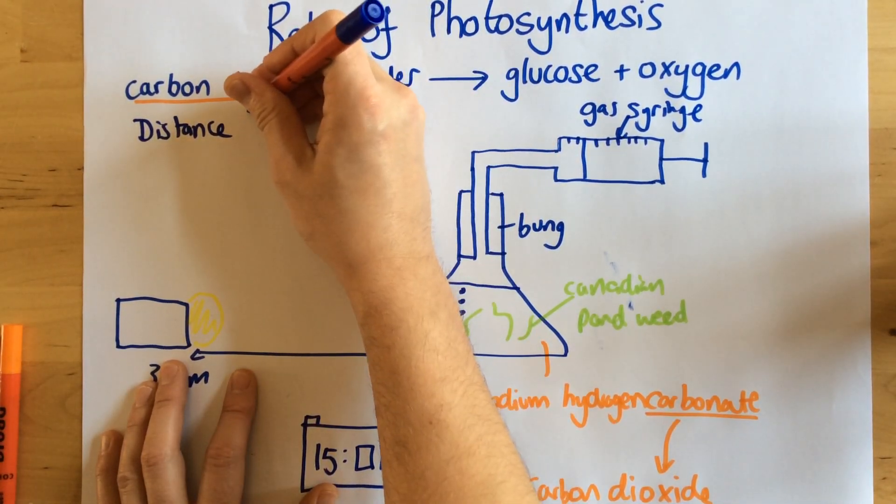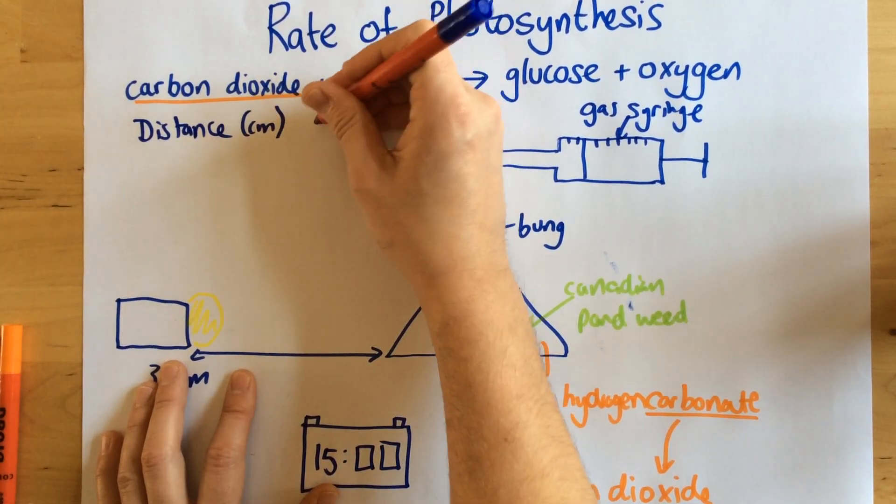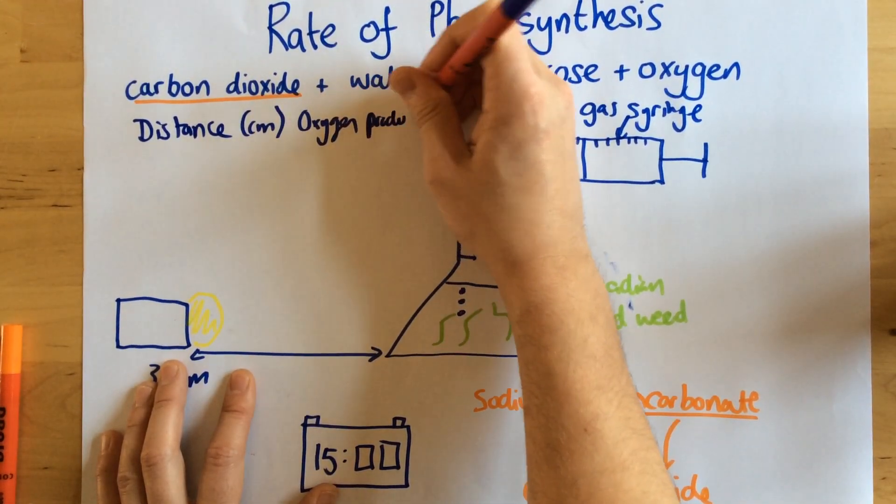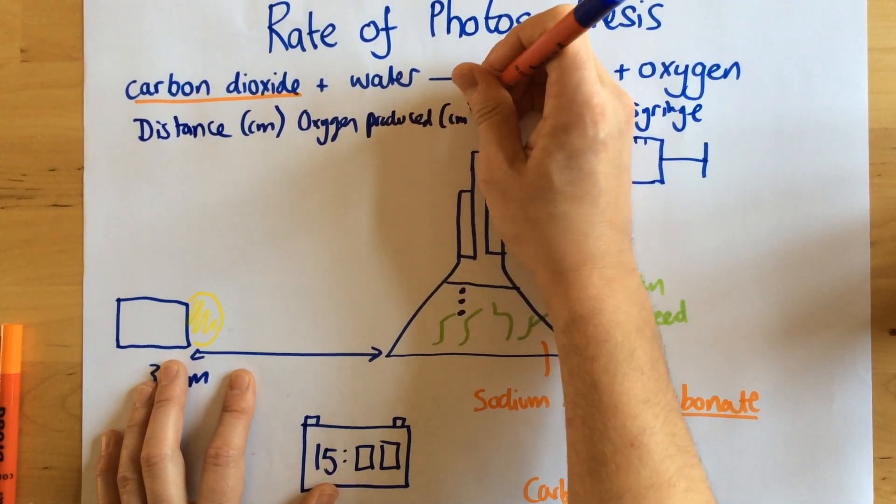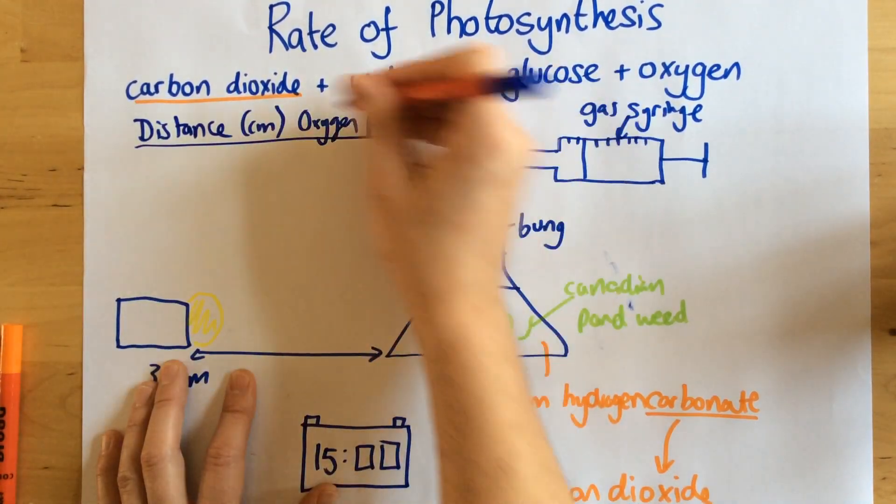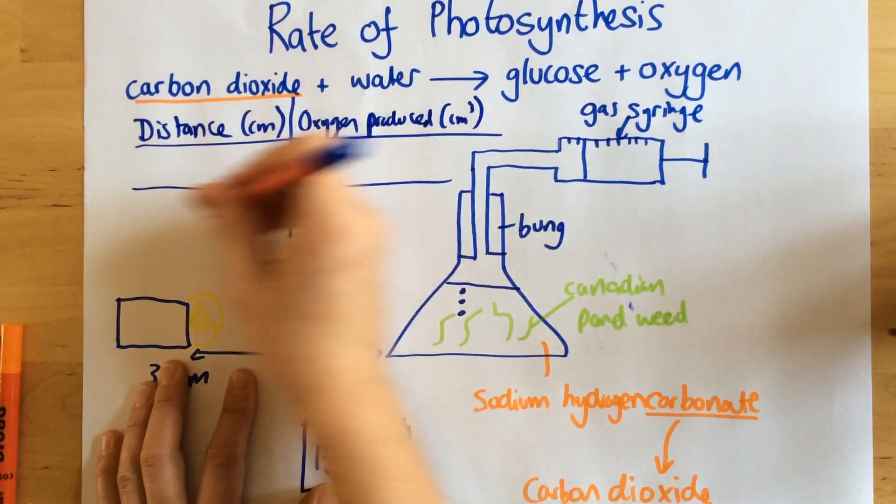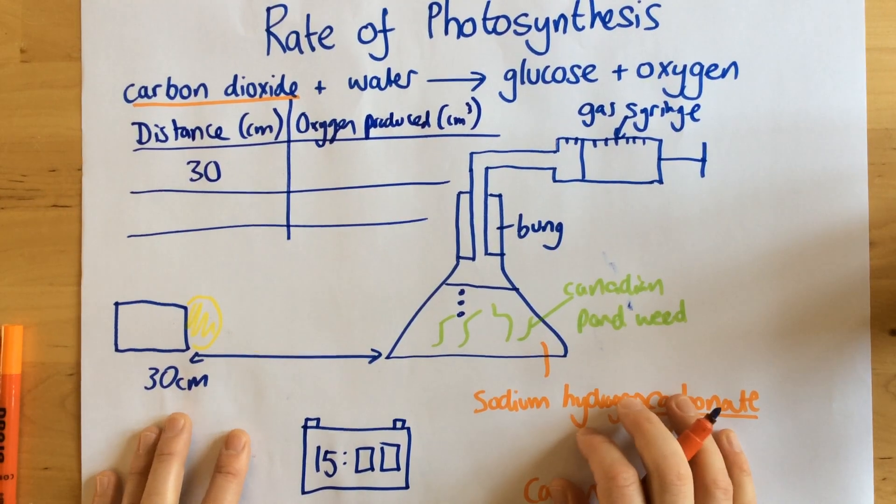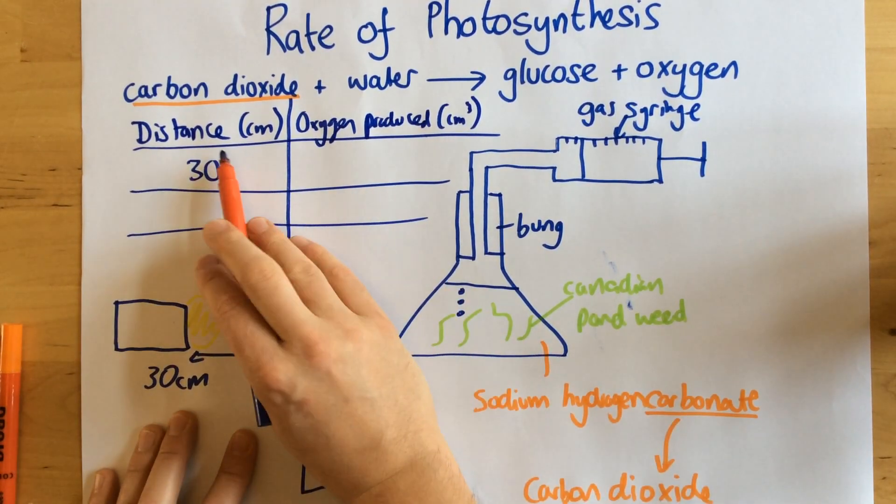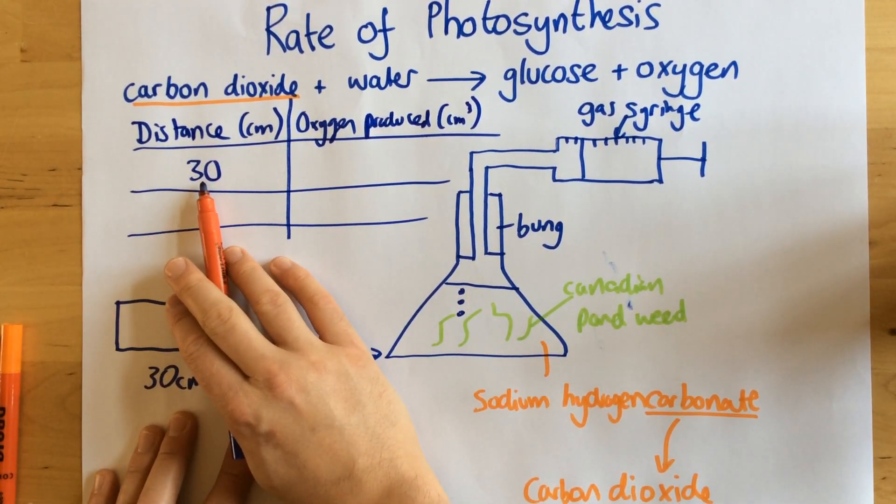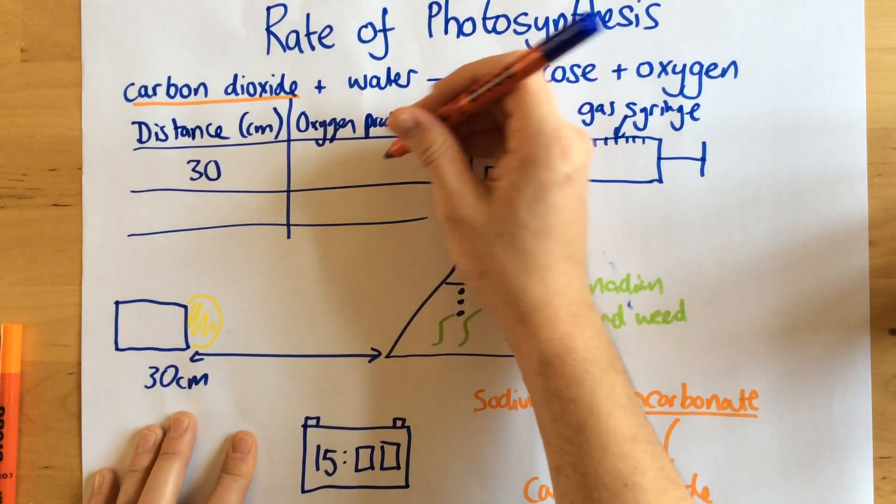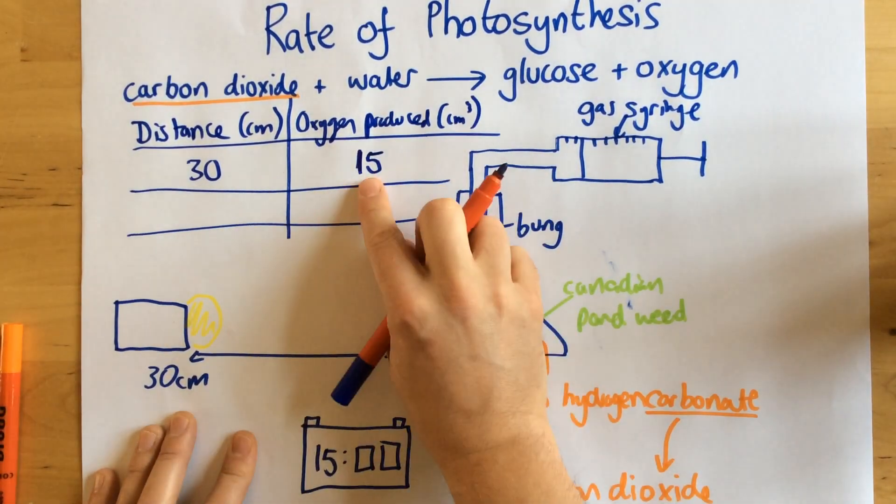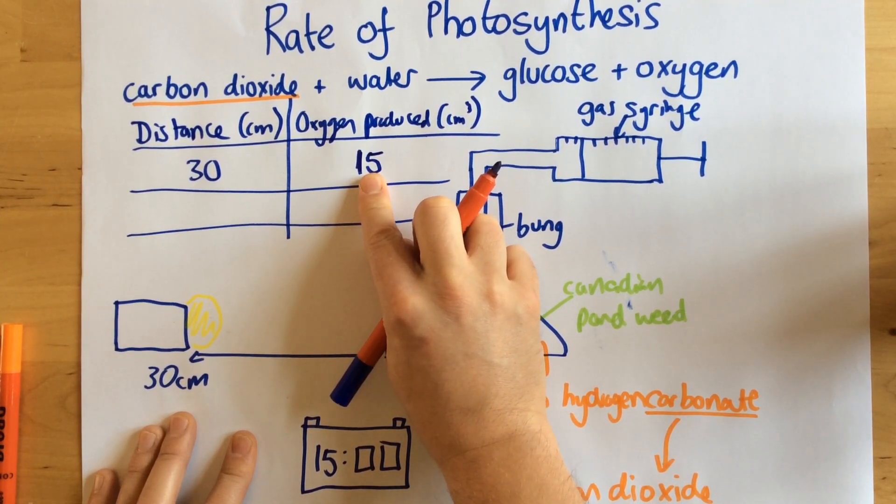So my distance in centimeters and my oxygen produced is going to be in centimeters cubed. So let's say the first one, the distance was 30 centimeters, and let's say when it's 30 centimeters away, it collected 15 centimeters cubed of oxygen.